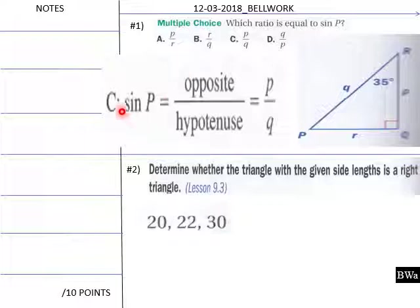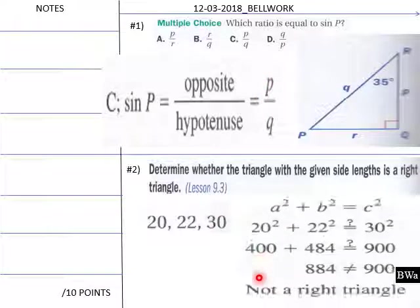Welcome back. The answer for number one up here, bell work, is C. The sine of P here—so the sine of angle P is opposite over hypotenuse, which would be p over q. And then down here, are these side lengths of a right triangle? a² + b² = c². With this, this would be your c. Does this add up to 900? It does not, so the triangle with these side lengths is not a right triangle.